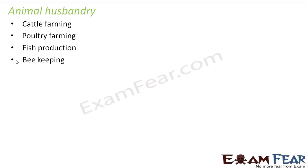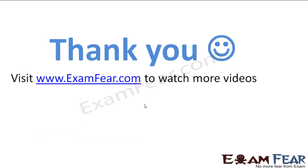Cattle farming includes cows and buffalos — we obtain milk from them, and they are also helpful in agriculture. From poultry farming we obtain eggs and chicken meat. Fish production is important because fish is a very good source of protein. From beekeeping and honey bees, we get honey, which is again consumed by human beings. These are the animals from which humans directly or indirectly obtain their food, and so they are taken care of in a special way.